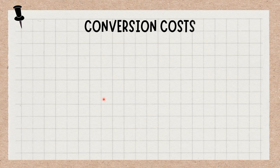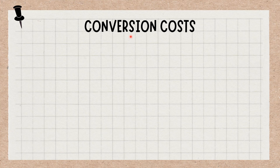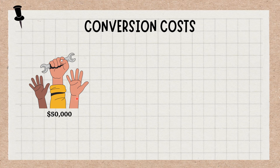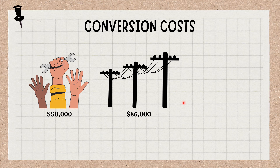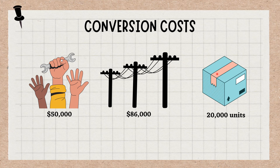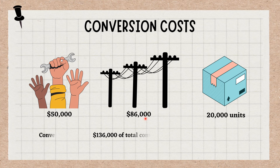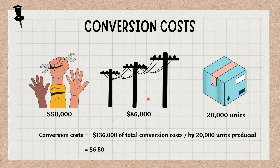Consider the example of Company A. The company has a total cost of $50,000 in direct labor and related expenses, in addition to $86,000 in factory overhead costs, during the month of April. Suppose that Company A produces 20,000 units. Thus, the company's conversion costs per unit for the month of April are $136,000 of total conversion costs divided by 20,000 units produced, which is equal to $6.80.